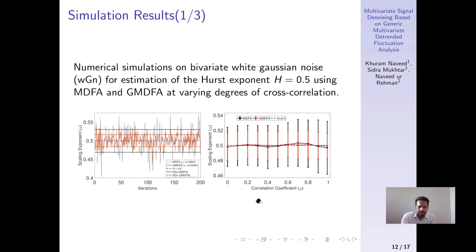And in this figure on the right side we demonstrate the effect of cross correlation on the final scaling exponent values. Again it is clear that with increasing the cross correlation the performance of the proposed method improves significantly.